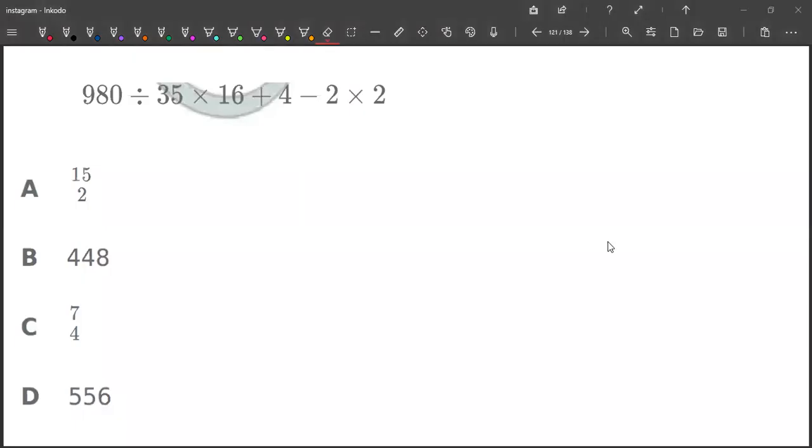Now let us solve this question: 980 divided by 35, into 16 plus 4, minus 2 into 2 is 4.